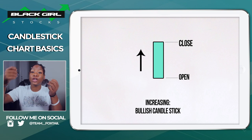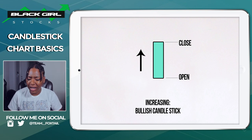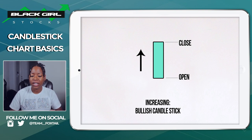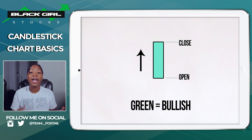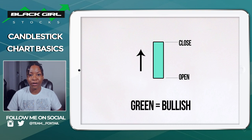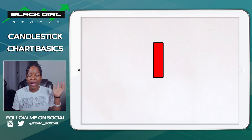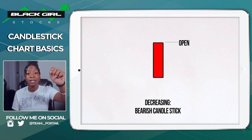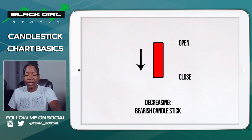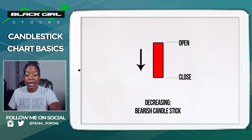It opened lower and closed higher — that's why it's green. You can actually change the color in Robinhood and platforms like thinkorswim, but plain green works fine to know it was a bullish move. This is a good look, showing possibility for uptrends. On the opposite side, you have a red candle — this means the stock had a bearish move, meaning it opened higher than it closed. It dropped, so the open is at the top and the close is lower.